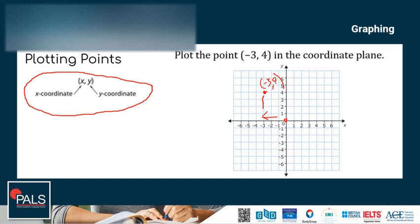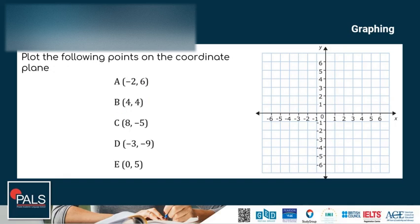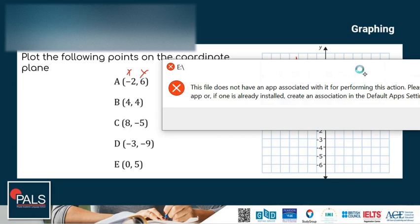Let's try another example: plot the following points on the coordinate plane. Starting with point A, x is -2 and y is 6. So, negative 2 is 2 units to the left and 6 units up. Point A is here. Then point B is 4 units to the left and 4 units up, so point B is here.